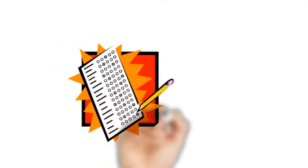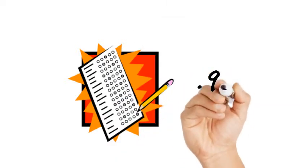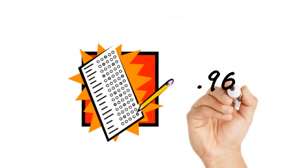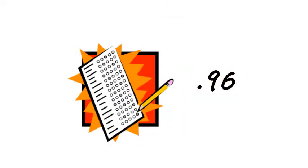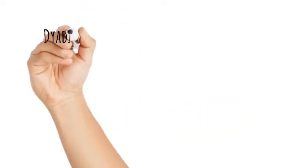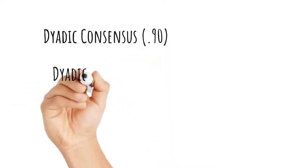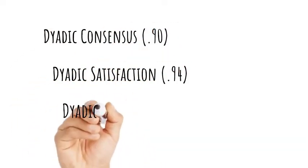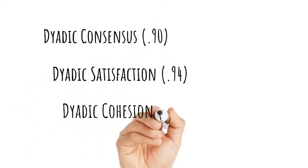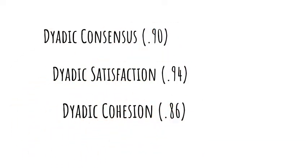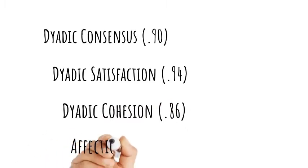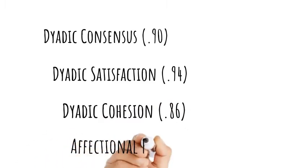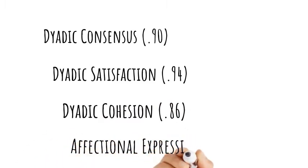Reliability for the entire 32-item scale is quite high at 0.96, and high for the subscales: dyadic consensus at 0.90, dyadic satisfaction at 0.94, and dyadic cohesion at 0.86. Only the affectional expression subscale has a reliability that dictates considerable caution, at 0.73.